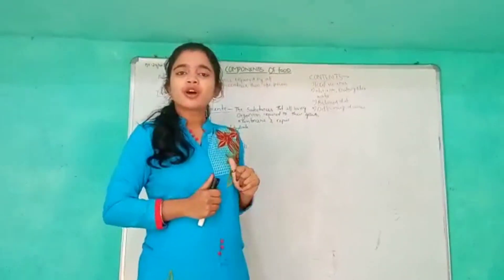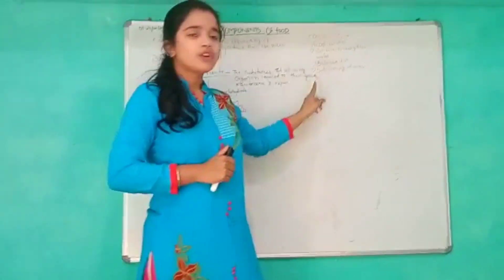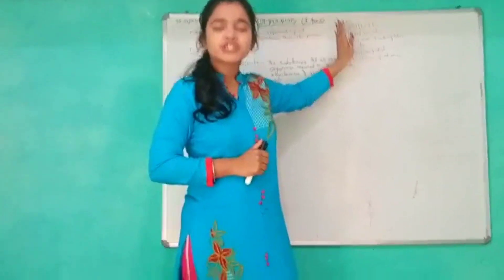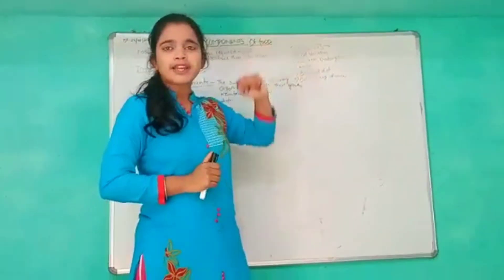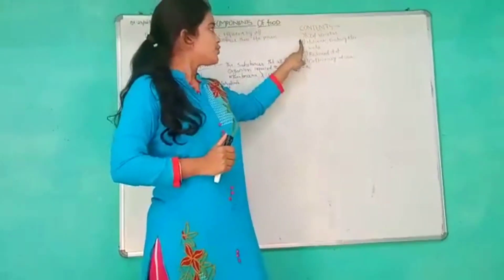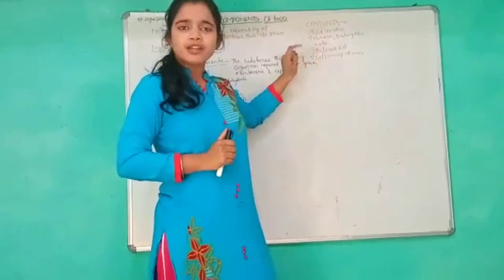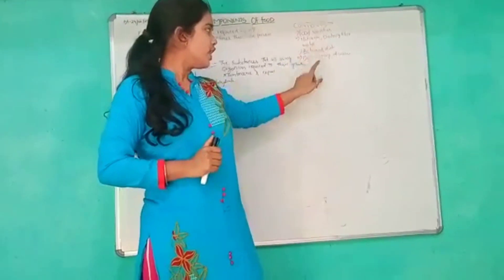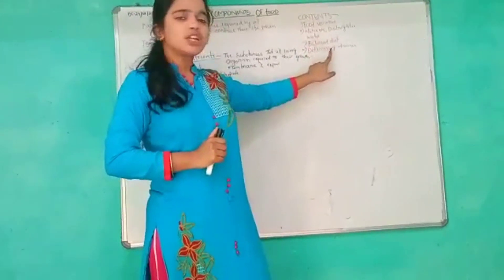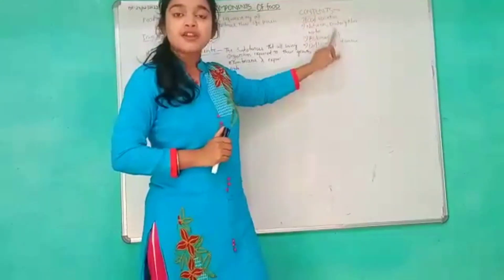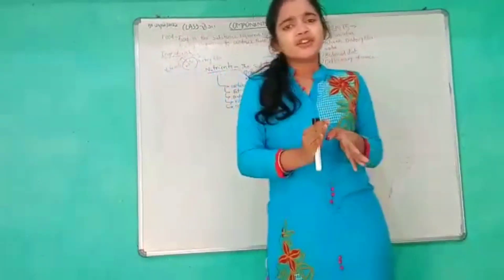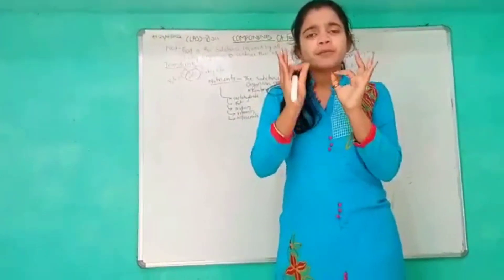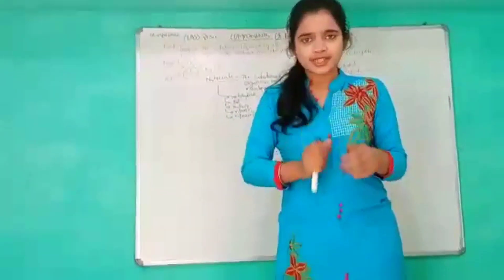So let's take a look at the contents which we have to cover in this topic. First is food varieties. Second is nutrients, dietary fiber, and water. Third is balanced diet. And fourth is deficiency diseases. So my dear students, regarding food varieties — in your previous chapter, you already discussed about food and its sources.